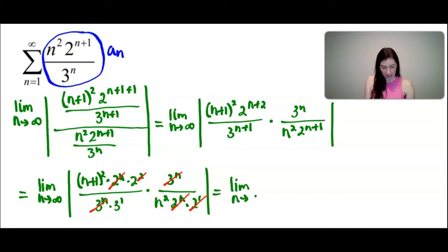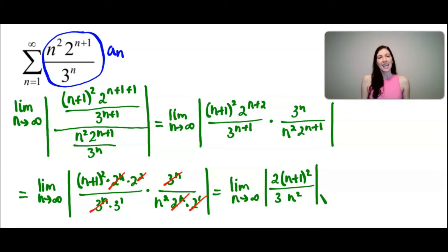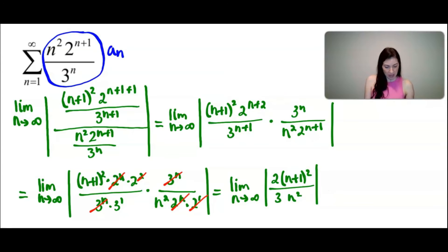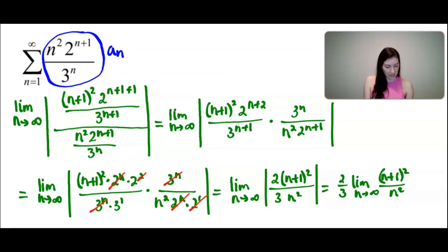Now we have the limit as n approaches infinity of: in the numerator a single 2 and (n+1) squared, and in the denominator a 3 and n squared — all inside the absolute value. At this point I can remove the absolute value because 2/3 is positive. Since it's a constant I can pull it out in front of the limit. And because n+1 and n are both squared, they're both positive, so I don't need the absolute value symbol.